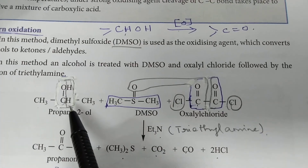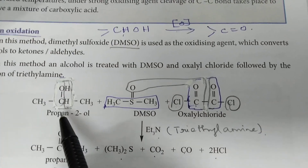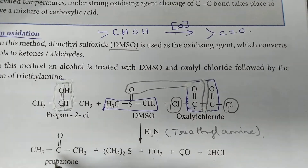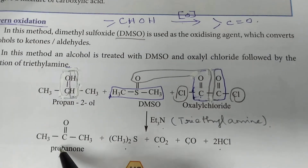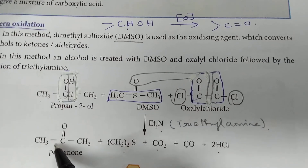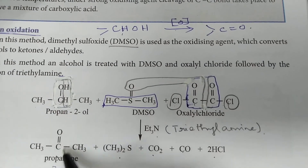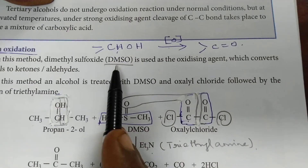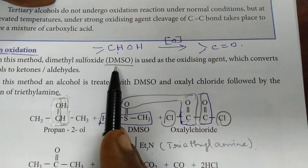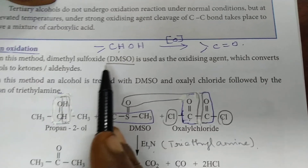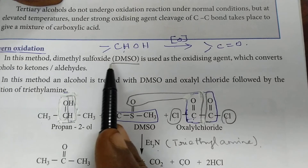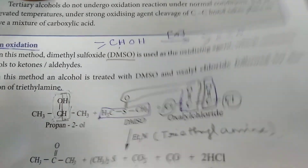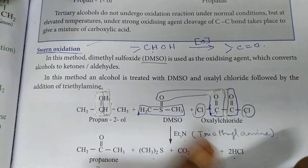Always remember: the secondary alcoholic group on oxidation gives ketone groups — that is very important. The oxidizing agent used is DMSO, Dimethylsulfoxide, and this oxidation is called Swern Oxidation.